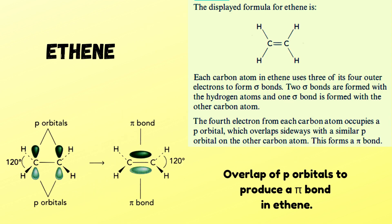The next example is ethene, with the displayed formula CH₂=CH₂. Each carbon atom uses three of its four outer electrons to form sigma bonds — two sigma bonds with hydrogen atoms and one sigma bond with the other carbon atom. The fourth electron from each carbon occupies a p orbital, which overlaps sideways with the similar p orbital on the other carbon atom, forming a pi bond.